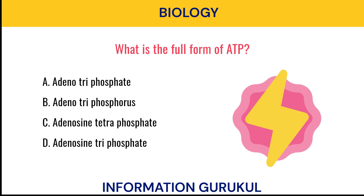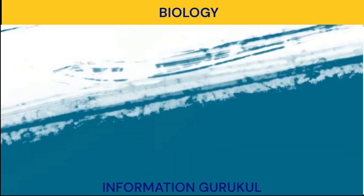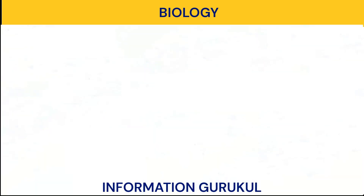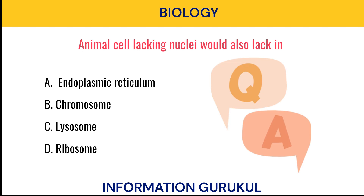What is the full form of ATP? Adenosine triphosphate. An animal cell lacking nuclei would also lack? Chromosome.